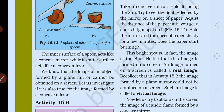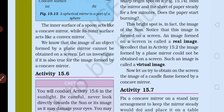This image is a real image because it can be obtained on a screen. The image formed by a plane mirror cannot be obtained on a screen — that kind of image, which cannot be seen on a screen, is called a virtual image.